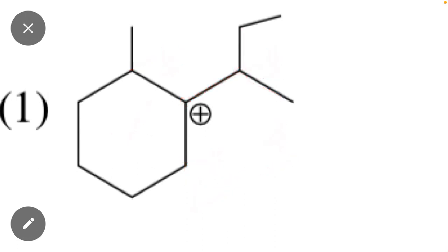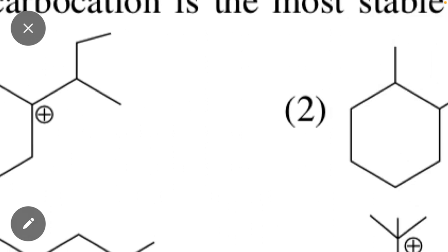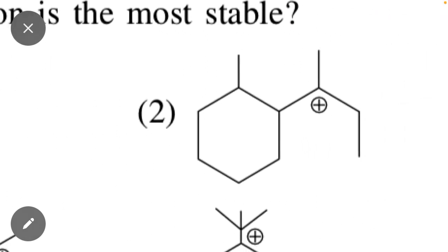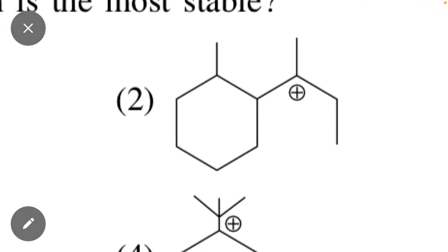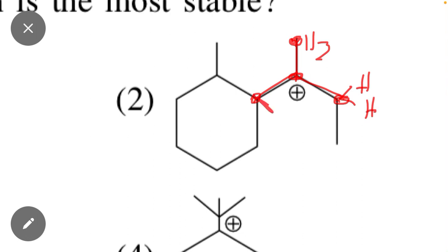Similarly, if we check the second option: the positive carbon is directly attached to one carbon, directly attached to another carbon, and directly attached to this carbon. This carbon contains three hydrogen atoms, this carbon contains two hydrogen atoms, and this carbon contains just one hydrogen — making a total of six hydrogens.